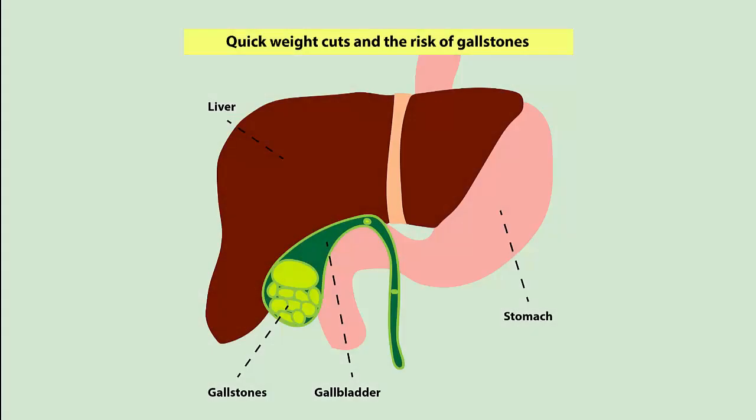In this drawing you can see how the gallbladder is related to other organs like the stomach and the liver. There are two major types of gallstones: cholesterol stones and pigment stones. For the purpose of this video, I will focus on cholesterol stones, which account for more than 90% of all gallstones in Western industrialized countries, with an overall prevalence of 8% in men and 17% in women.